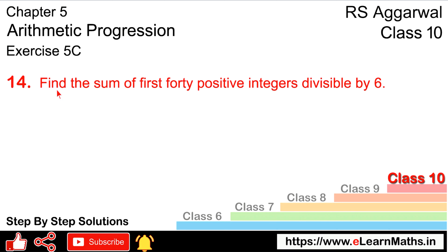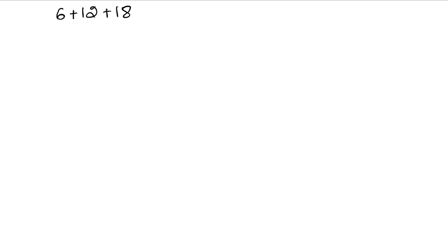Let's do question number 14 of exercise 5C, that is arithmetic progression. Question number 14 is: find the sum of the first 40 positive integers divisible by 6. So we make our AP — the first number will be 6, then 12, then 18, and so on, for the first 40 terms.